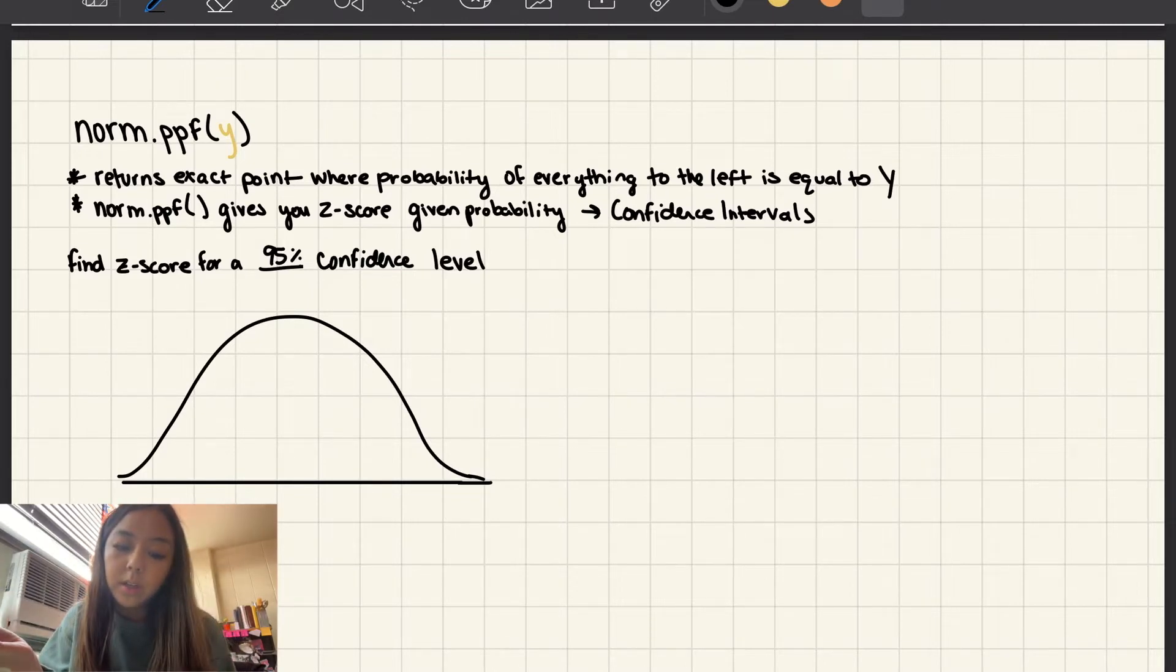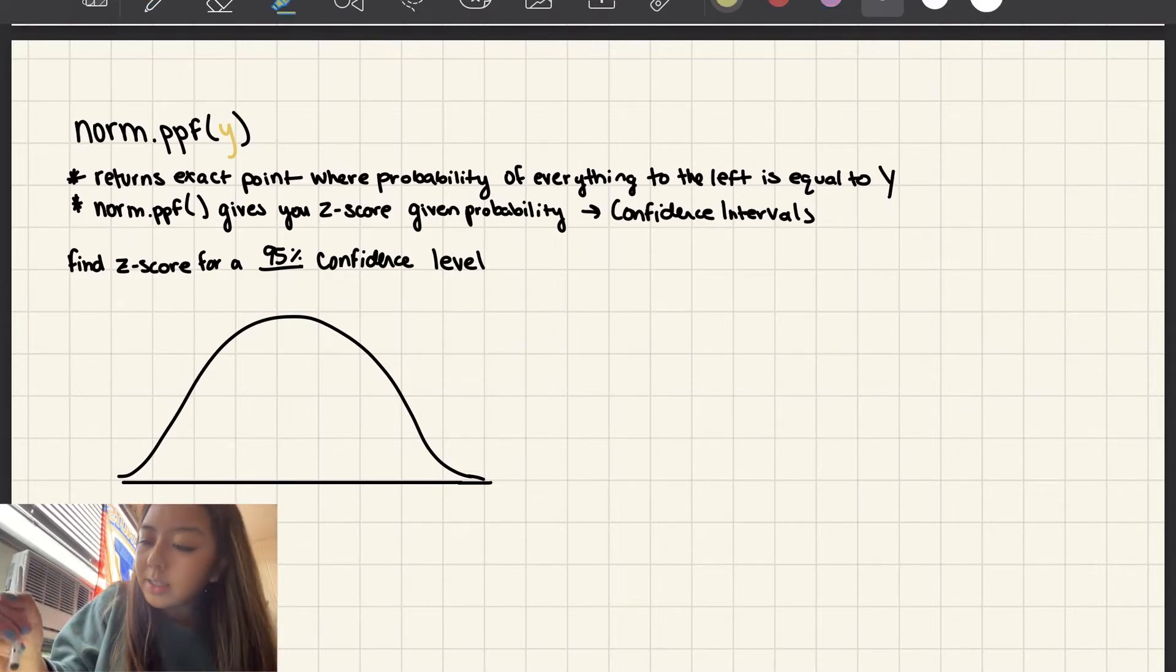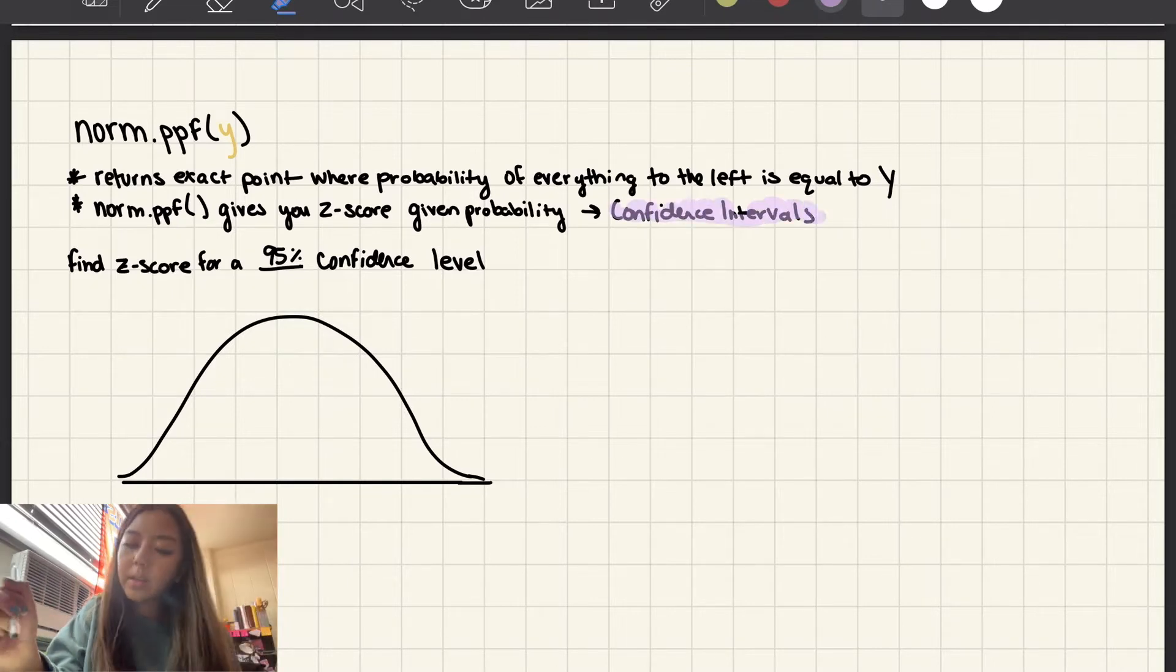In other words, the norm.ppf function will give you the z-score given that you know the probability. I put confidence intervals here because we're commonly going to use this function when we're trying to calculate a confidence interval.